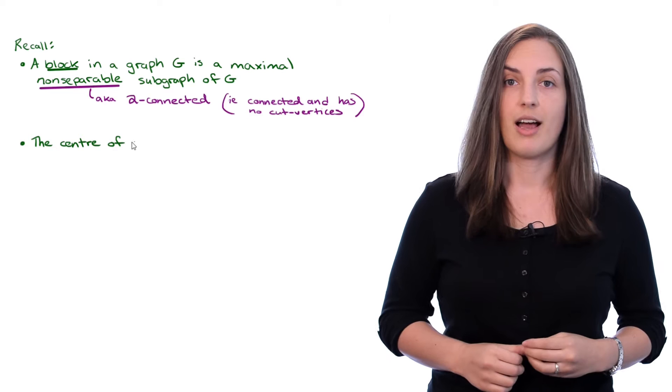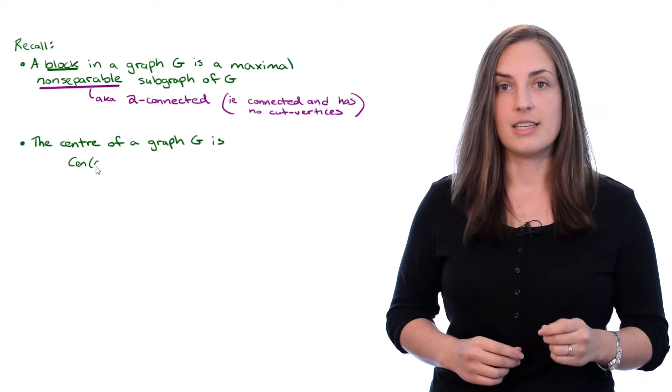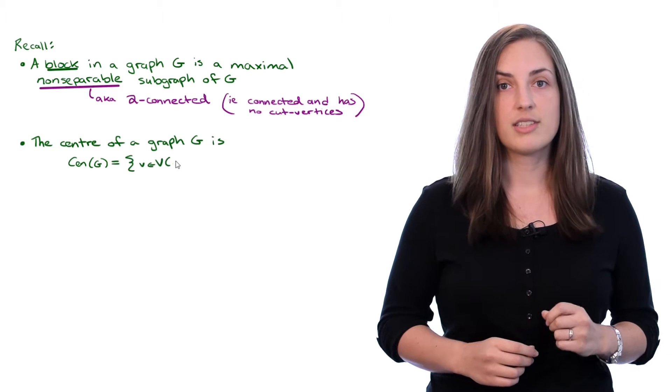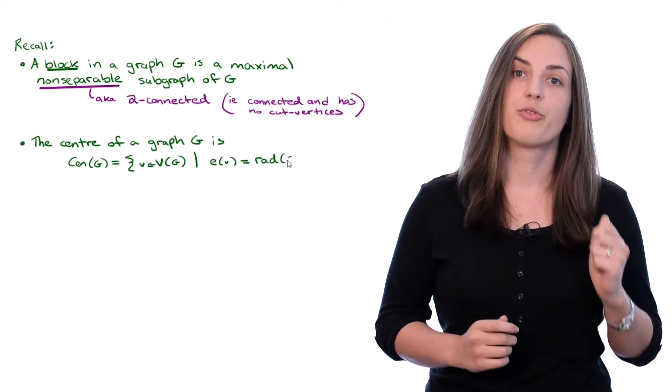let's talk about the center of a graph. Recall that the center is equal to the set of all vertices of the graph, whose eccentricity is equal to the radius of that graph. If you would like a review about these terms, check out this video about eccentricity, radius and diameter, or see the links in the description below.